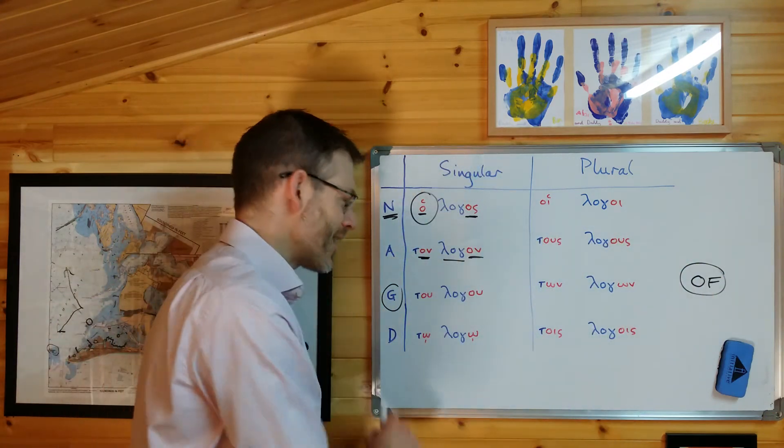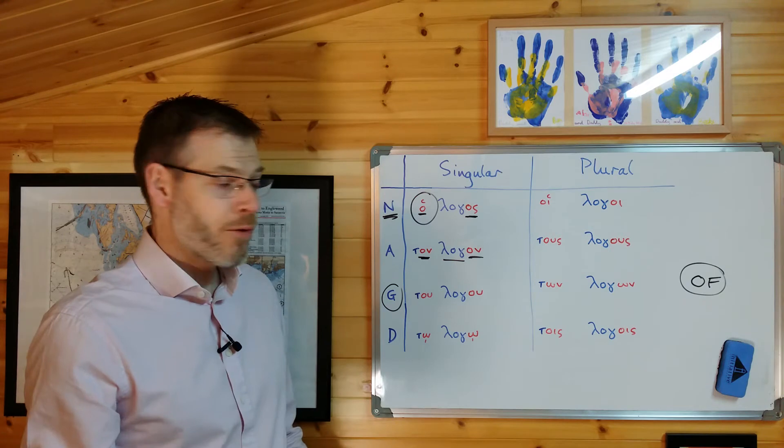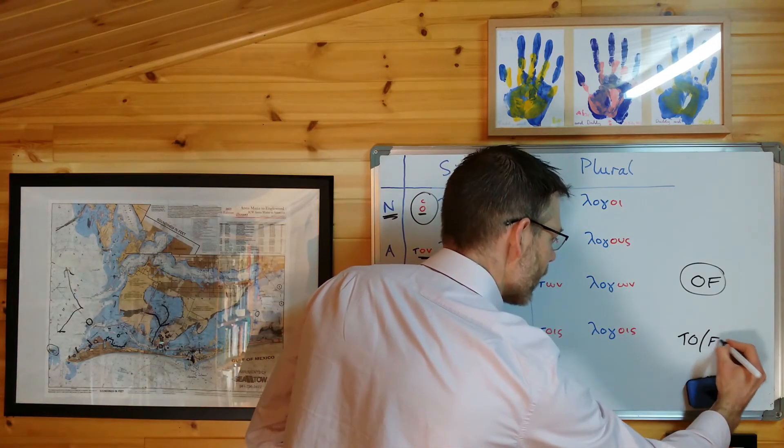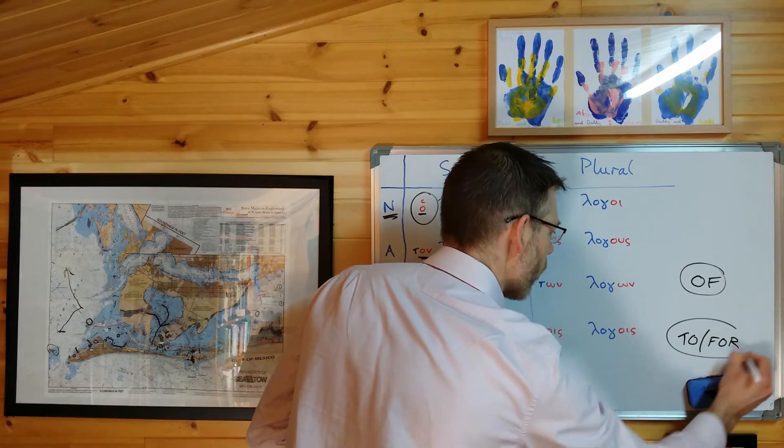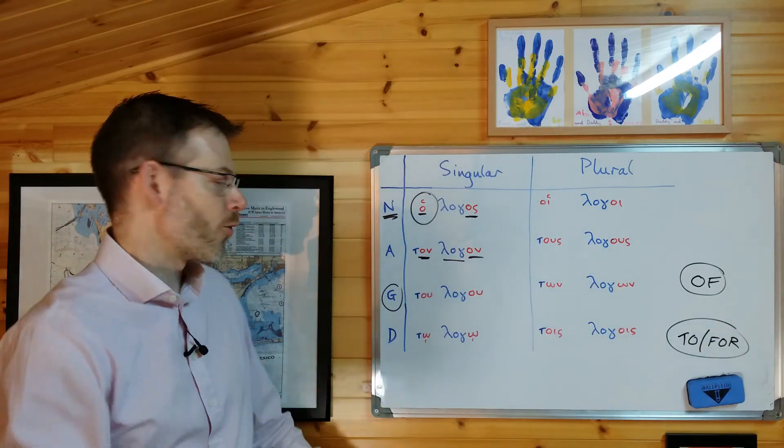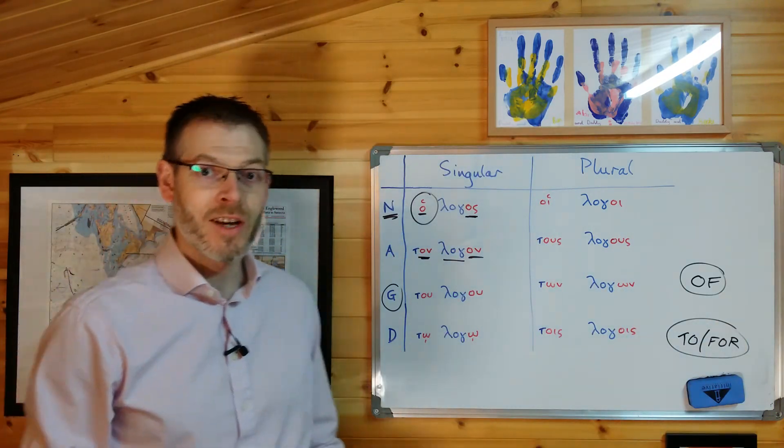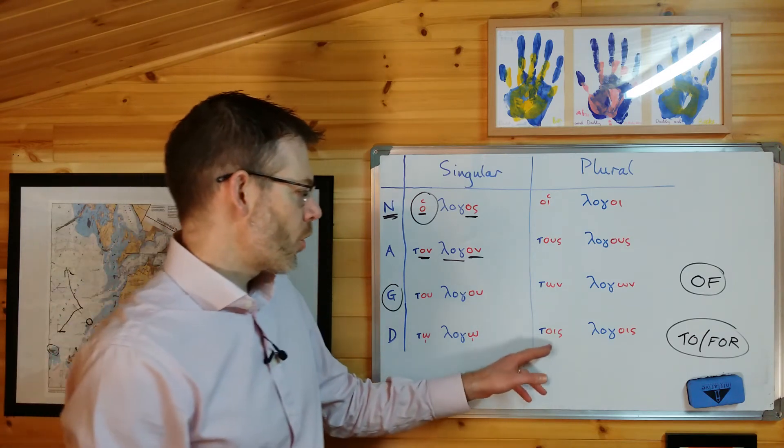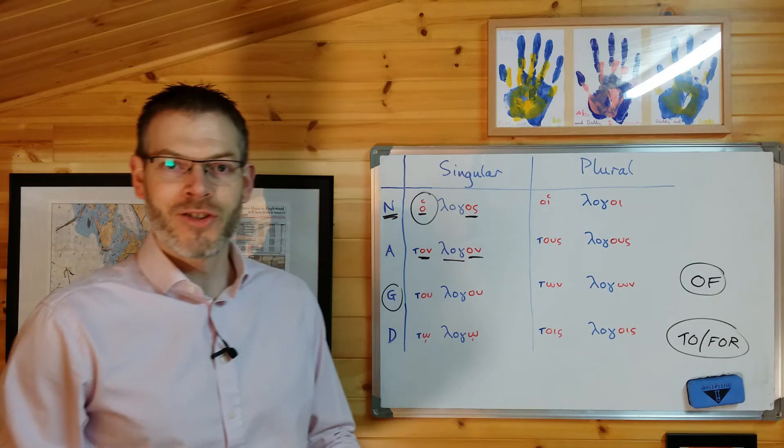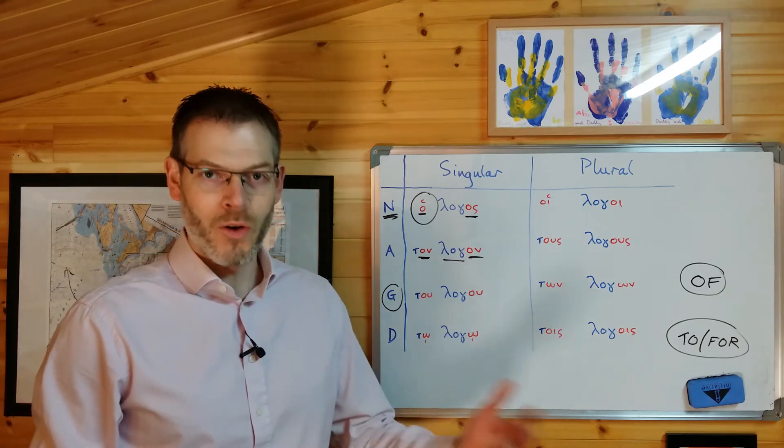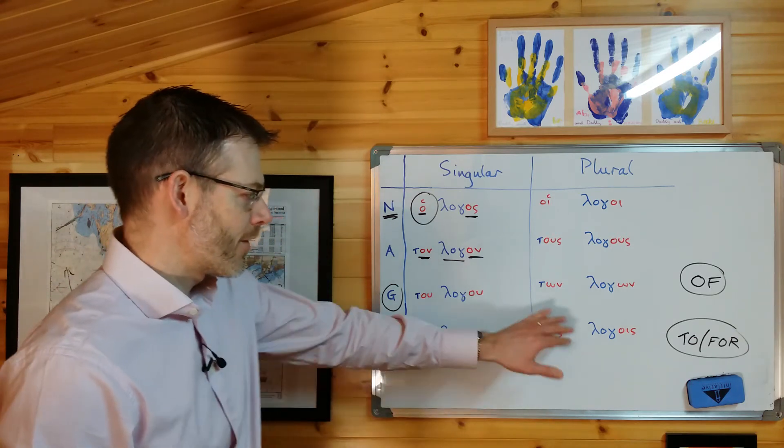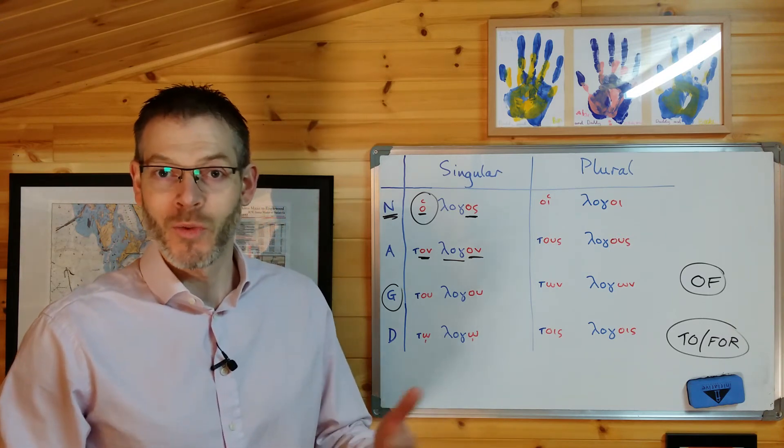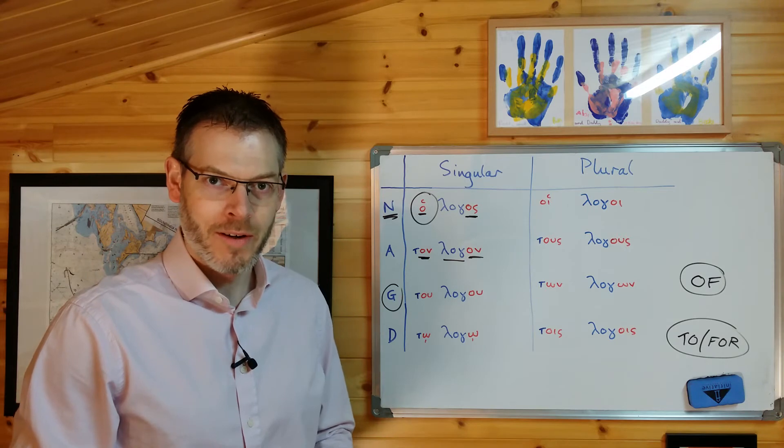When you see a dative, you think not of, but to or for. To or for. So to logoo means to the word, or for the word. Tois logois means to the words, or for the words. And of course, if the article is missing, it's the same again, it's to a word, or for a word, or to words, or for words, and so on.